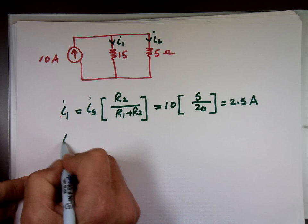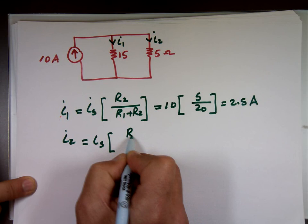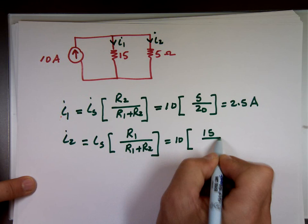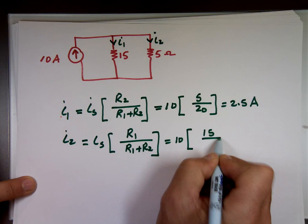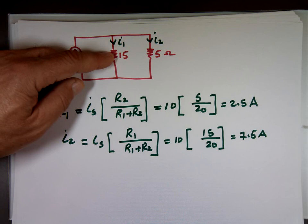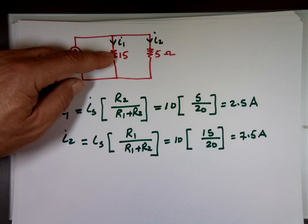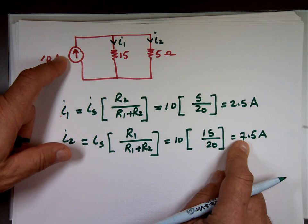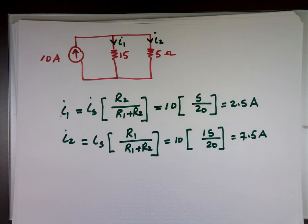I sub 2 is going to be equal to I sub S times R1 over R1 plus R sub 2. 10 times 15 over 20, which is 7.5 amps. And what do you know? This number, 3 times that number. The current through this is going to be 3 times that number. Why? Because this resistor 3 times that. When you add the two numbers, what's the sum? 10. KCL, algebraic sum of all the current entering a node, should equal the algebraic sum of all the current leaving that node. So everything seems to be working beautifully.